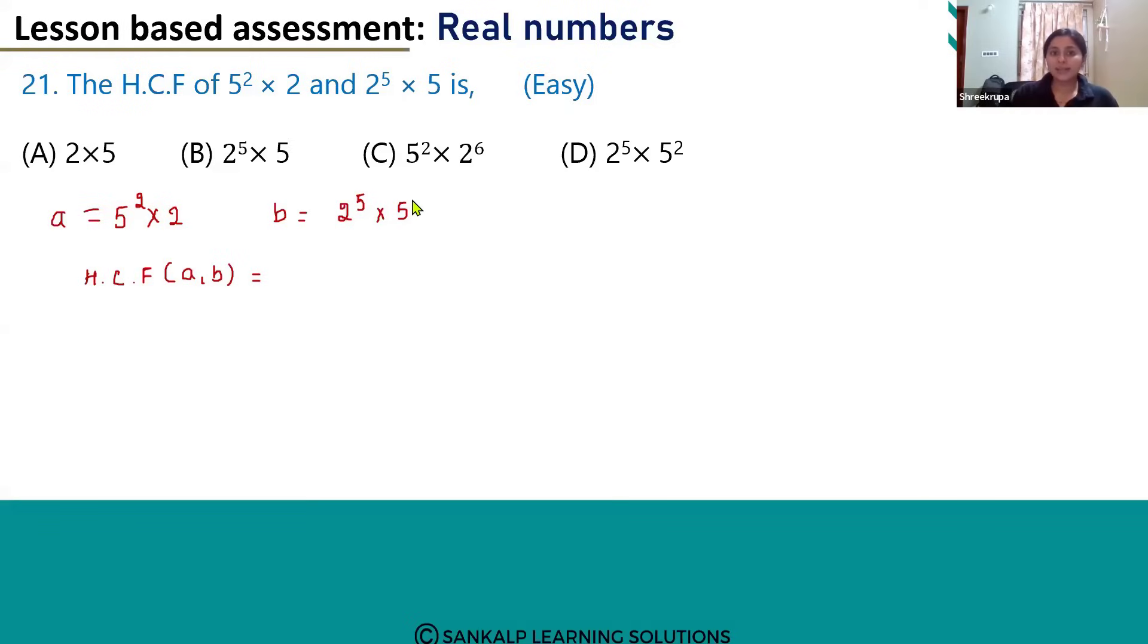If we take the least powers, both 2 and 5 are common in both numbers. 2¹ is the least power of 2, and 5¹ is the least power of 5.